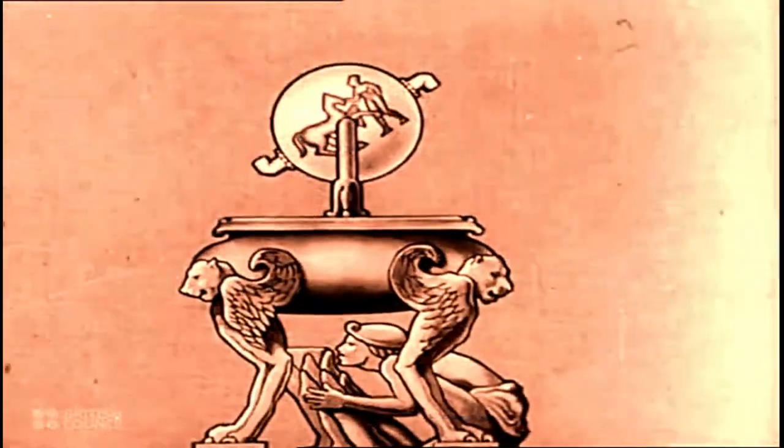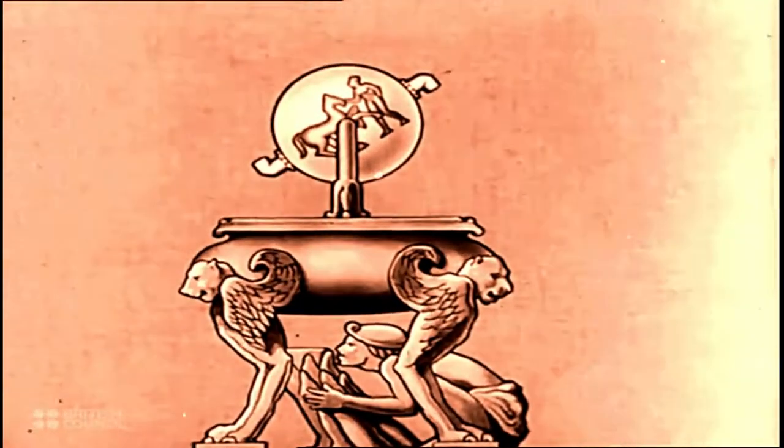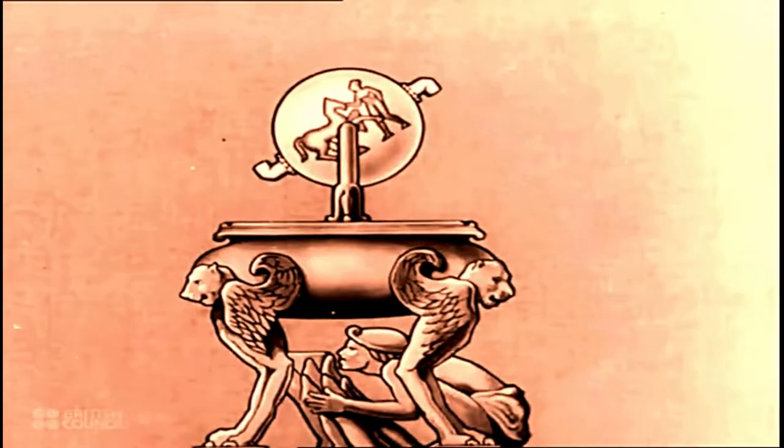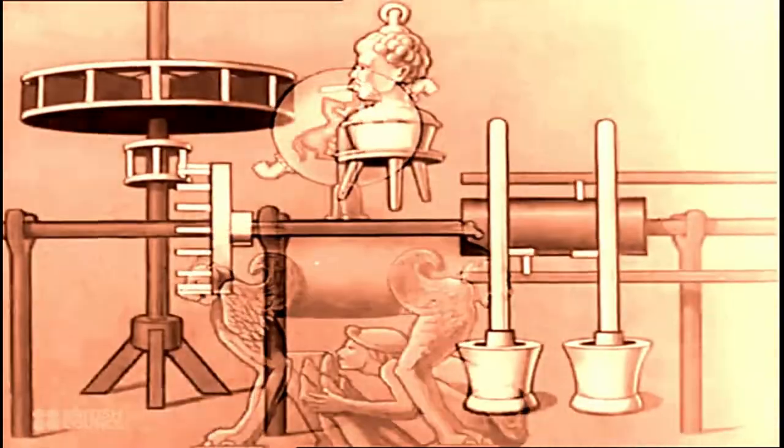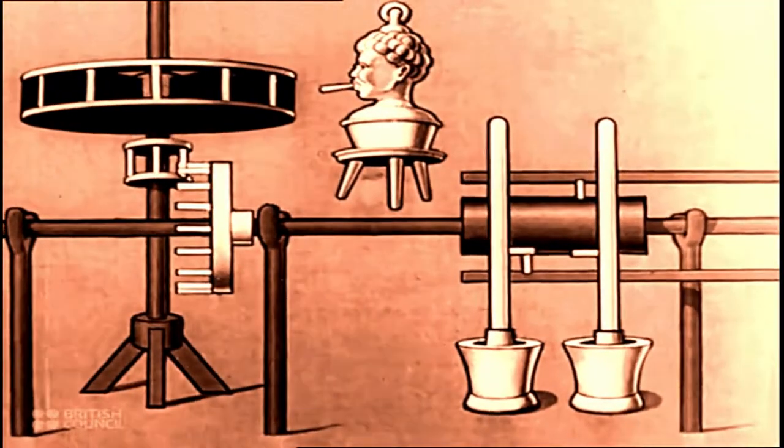However, nothing much came of Hero's idea until it was revived in the 17th century by an Italian named Branca. His method was to arrange a jet of steam so that it revolved a veined wheel, very much like a modern water wheel.